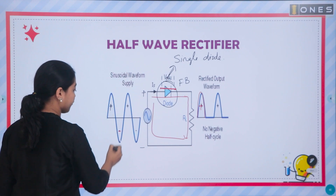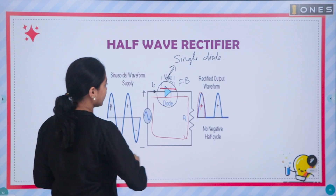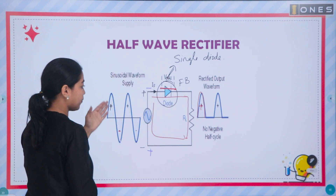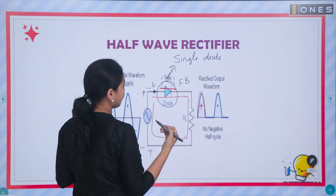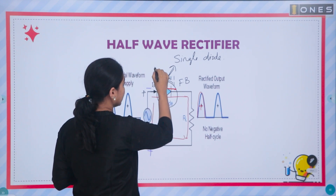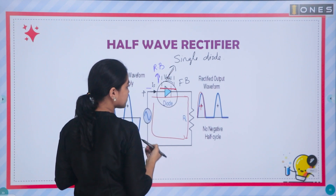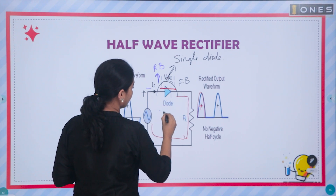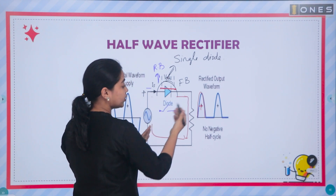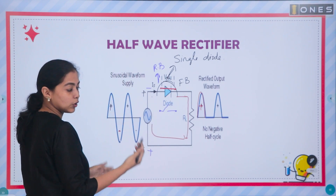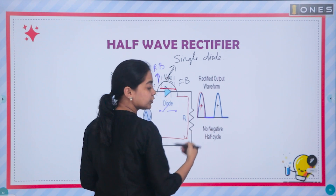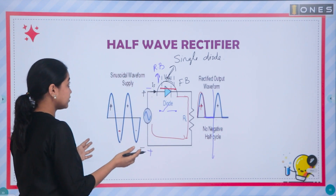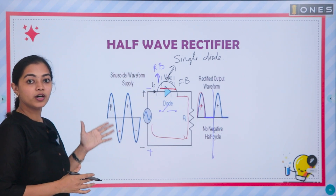And what about the case of a negative half? In the case of the diode, the diode will become reverse biased. Reverse biased means the diode acts as an open switch. Current flow is zero. So, the negative half is blocked. The same process is repeated, and this is the working of a half-wave rectifier.